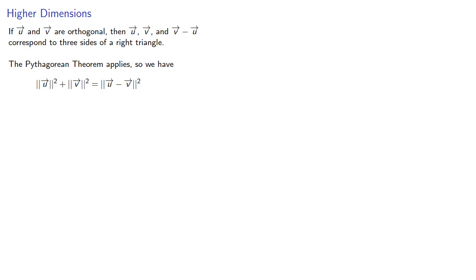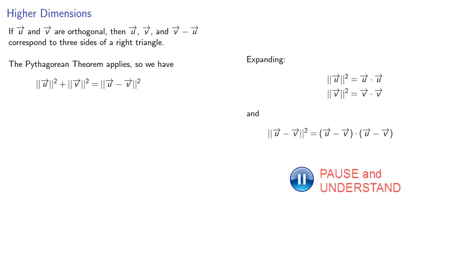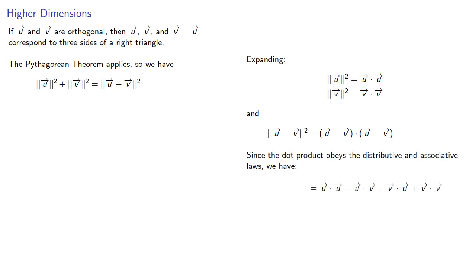But remember we can express these norms in terms of the dot products. And since the dot product obeys the distributive and associative laws, we have... And since we have the dot product of u with itself and the dot product of v with itself, we'll just express that as ||u||² and ||v||². Substituting these in and simplifying...